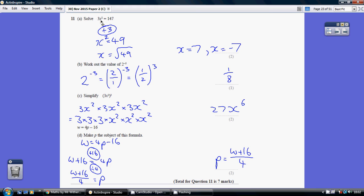So how do we undo the times by 3? Well we choose to divide both sides by 3. So x squared equals 147 divided by 3 which is 49.